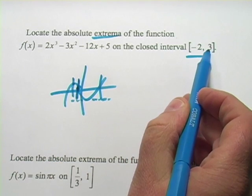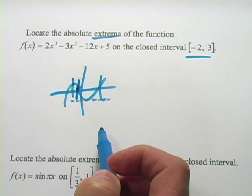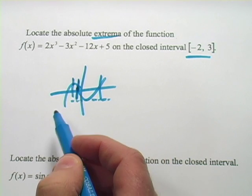So you have to test the endpoints and you have to test the zeros of the derivative. So that's what we're going to do. Let me show you how this works.